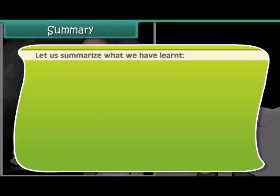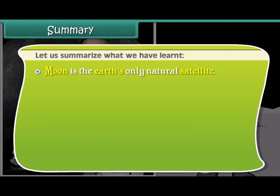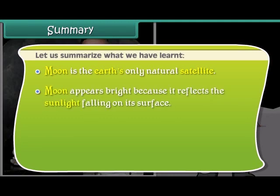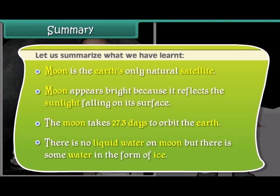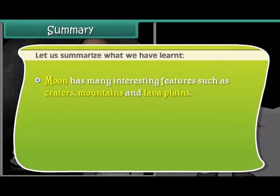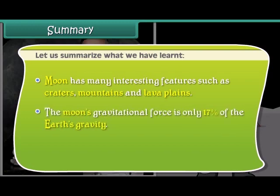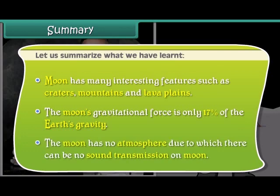Let us summarize what we have learned. The moon is the Earth's only natural satellite. The moon appears bright because it reflects the sunlight falling on its surface. The moon takes 27.3 days to orbit the Earth. There is no liquid water on the moon, but there is some water in the form of ice. The moon has many interesting features such as craters, mountains, and lava plains. The moon's gravitational force is only 17% of Earth's gravity. The moon has no atmosphere, due to which there can be no sound transmission on the moon.